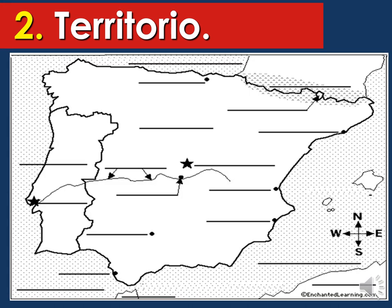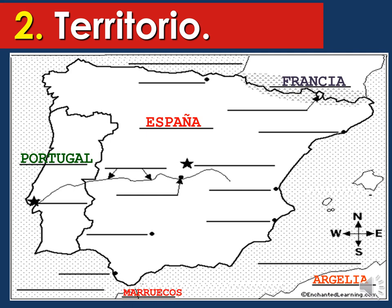Now we're going to start talking about the mapa of España. I'm going to provide this mapa in the classroom — make sure that you paste it in your journals, because we're going to discuss the countries surrounding España, the main oceans, the main cities, and the main river. España means Spain. España is surrounded by Portugal, Francia (which means France), Argelia, and Marruecos (Morocco). Make sure that you're filling this in your mapa. The main capital city is Madrid — every time you see a star in a map, it refers to the capital city. For Portugal, the capital is Lisboa, or Lisbon.